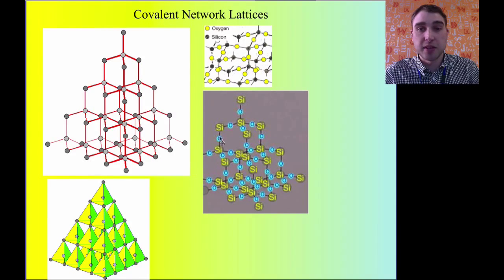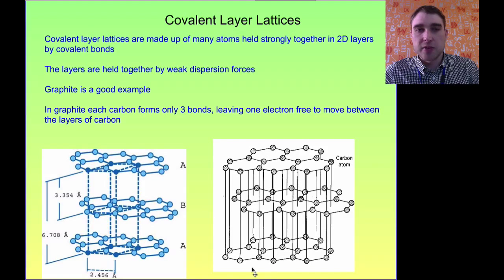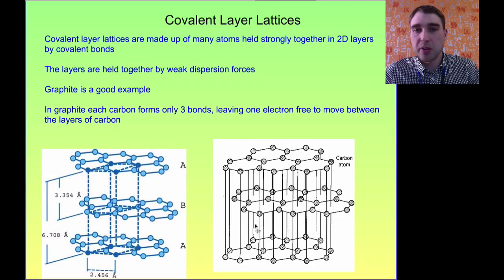Some examples: silicon dioxide forms these lattices. Diamond is carbon forming four bonds with another carbon, giving really, really strong lattices. Then you can get covalent layer lattices — lattices in two dimensions that stack on top of each other. Graphite is a good example: you get a hexagonal structure of carbon with layers stacked on top of each other. In graphite, each carbon only forms three bonds, so there are spare electrons, which means graphite can conduct electricity.